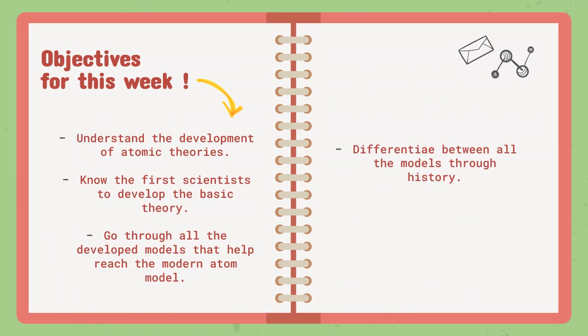As for the objectives of this week, we will understand the development of atomic theories. The theory of the atom started a really long time ago, so we will go through the levels it passed through — how the first scientists developed the basic theory, where the theory of the atom started, and then all the developed models that helped us reach the modern atom model.